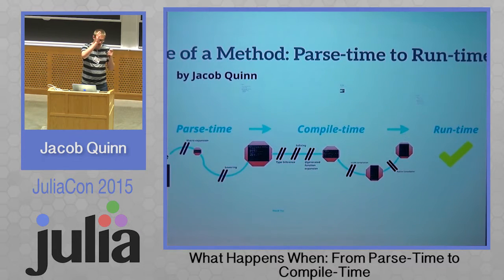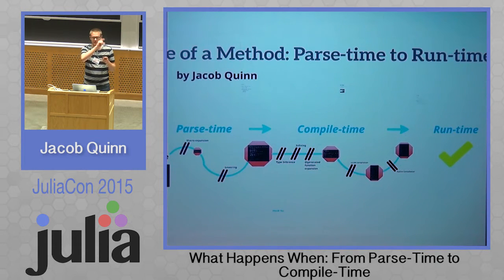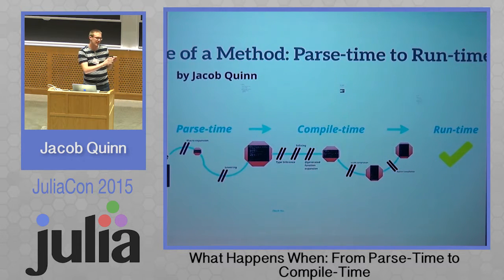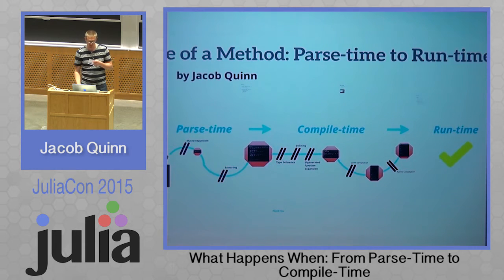So we talk about parse time, compile time, and run time. Parse time is when you actually evaluate a function definition — whether it's with the 'function' keyword, the name, types, body, and 'end', or the single-line syntax. Compile time happens when you actually call the method. And then run time happens when it runs.